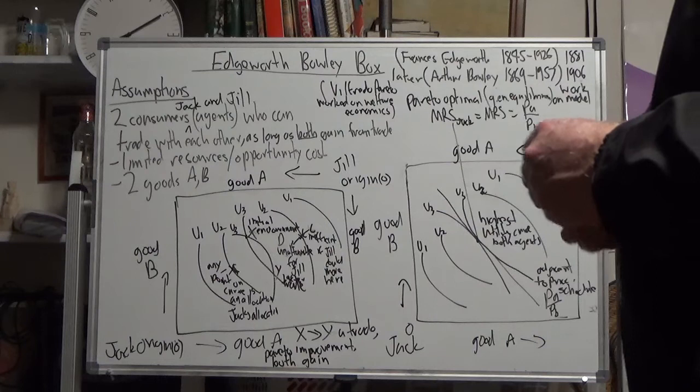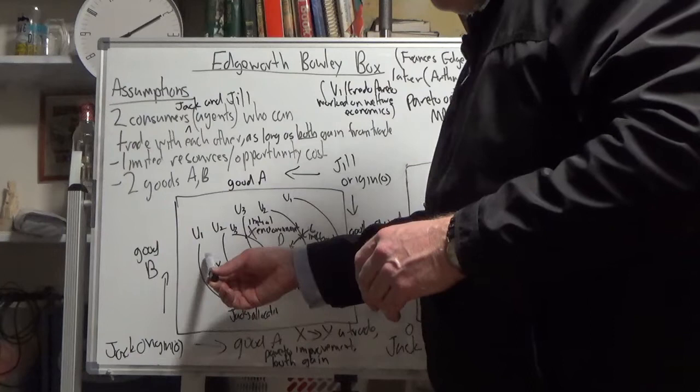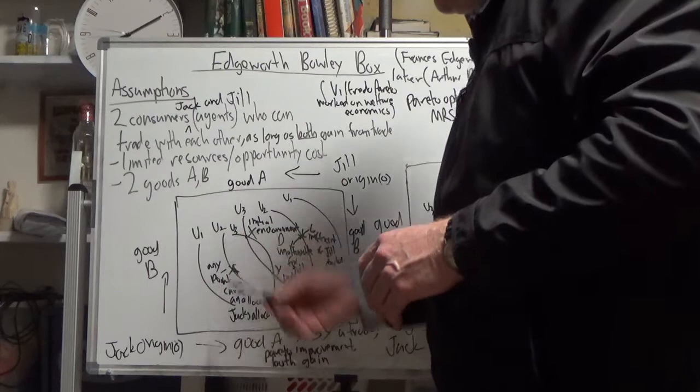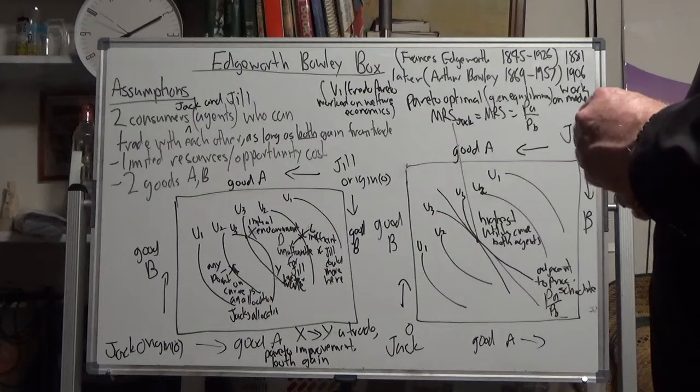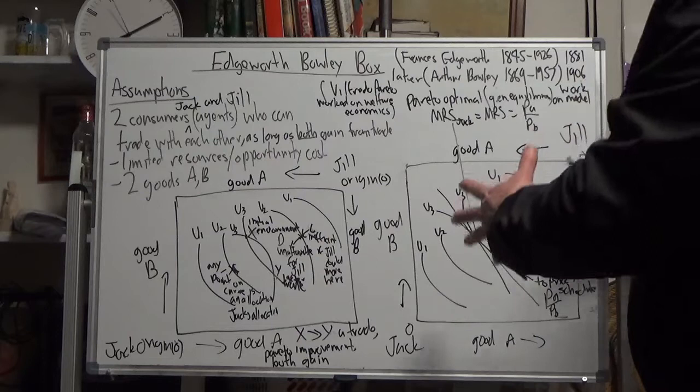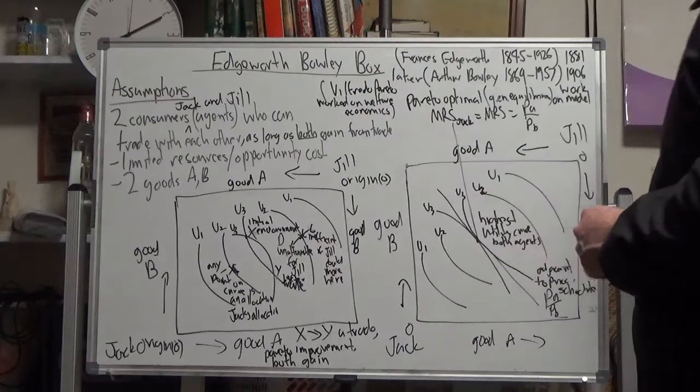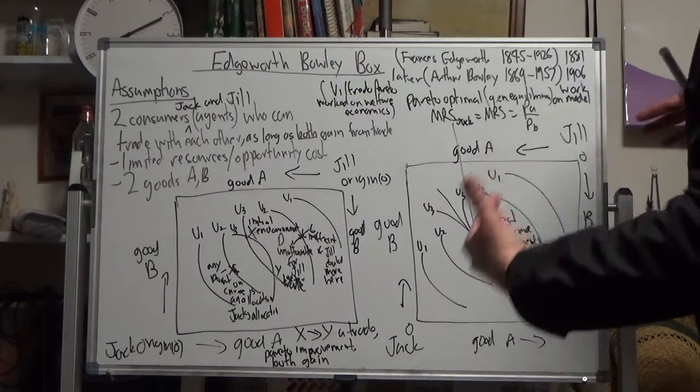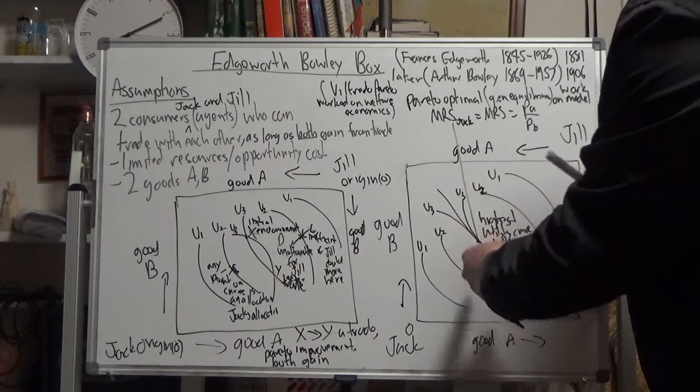If Jack's indifference curve was U2, if his choice of goods was here, that would be inefficient. He could move to there. That point would be unattainable if we're only considering U2 indifference curve. We've got to get to general equilibrium, which is equilibrium for two agents in this simple closed economy. We call it general equilibrium, and the absolute final place they can meet and trade is this final indifference curve.